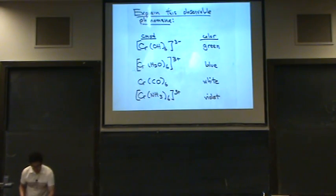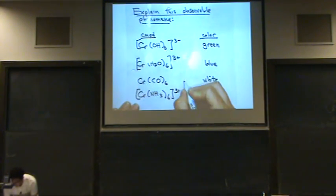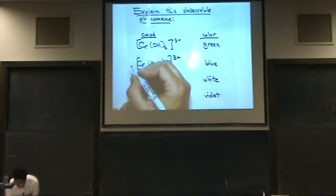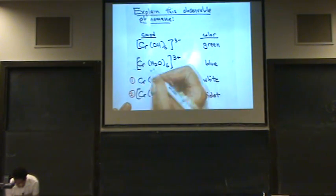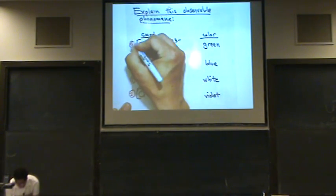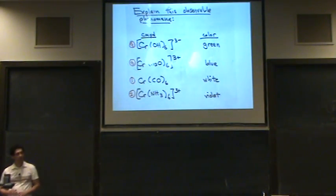So I'll just put the highest as number one, and that was this one. And the next highest was NH3. The next highest was H2O. And the weakest ligand, according to my series, is that one from the top.